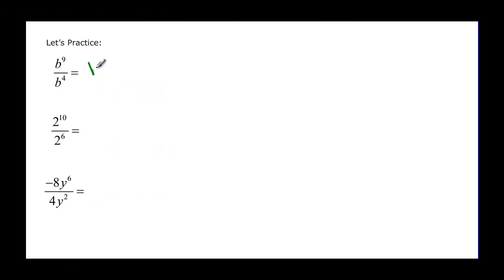Let's practice. This is b to the 9 minus 4, how hard is that? 9 minus 4 is 5. This is 2 to the 10 minus 6, so 2 to the 4. Now when I have this here is my same base dividing but I also have these numbers that I also have to divide, don't cheat your numbers. So negative 8 divided by 4 is going to be negative 2, and then my y's will be y to the 6 minus 2. My final answer is negative 2y to the 4.